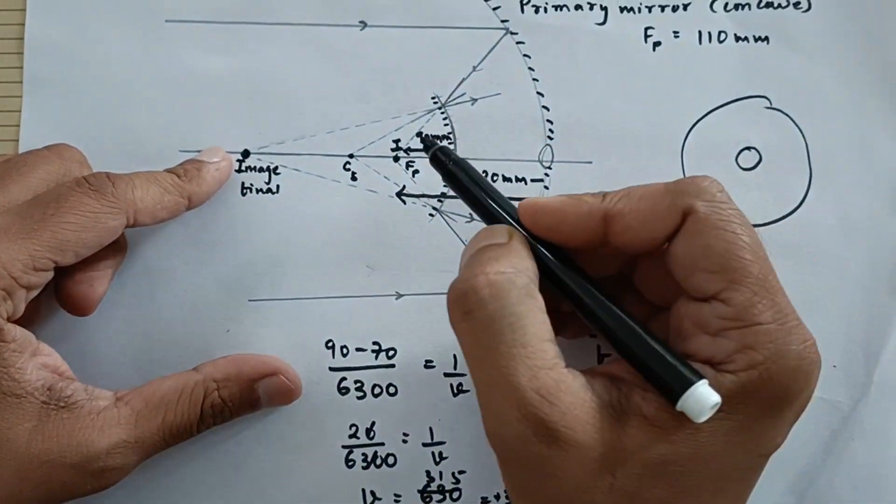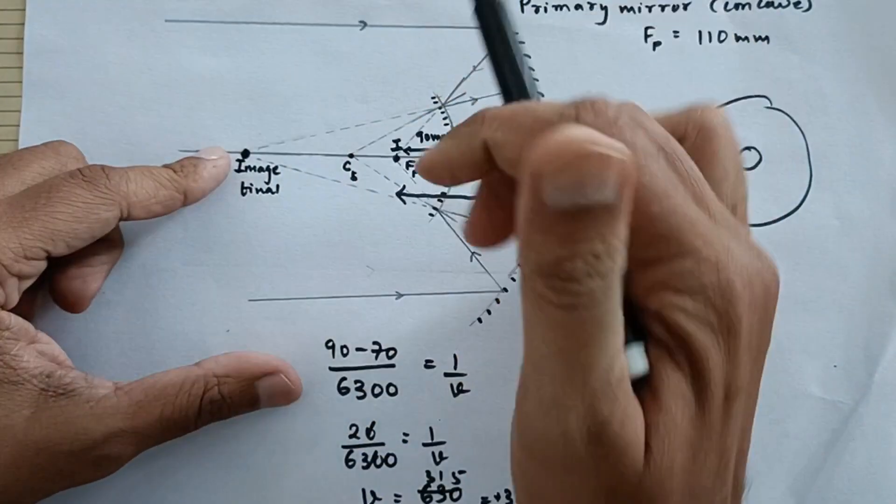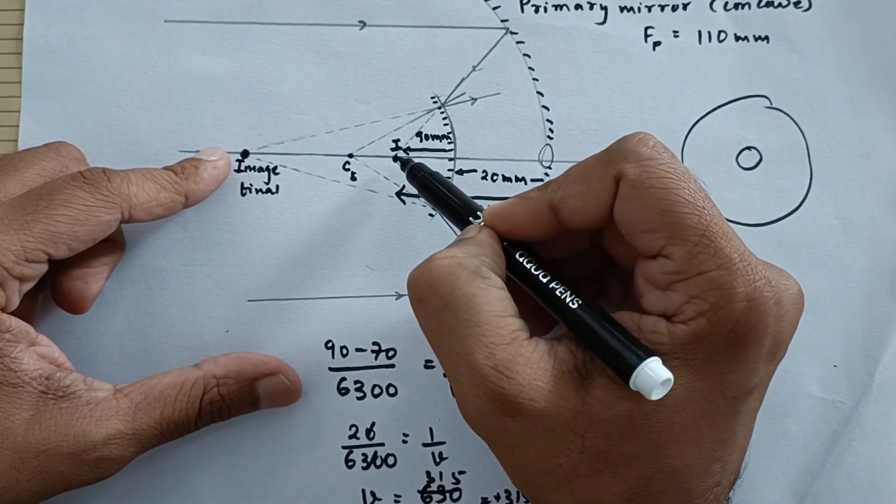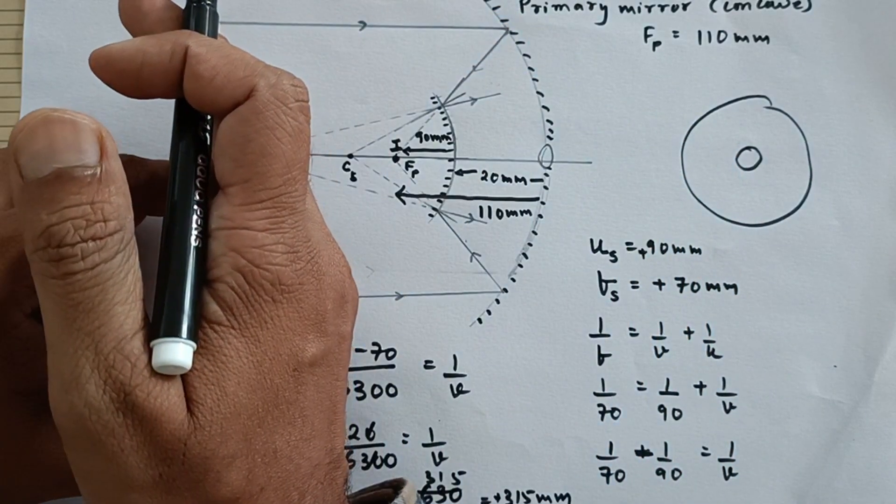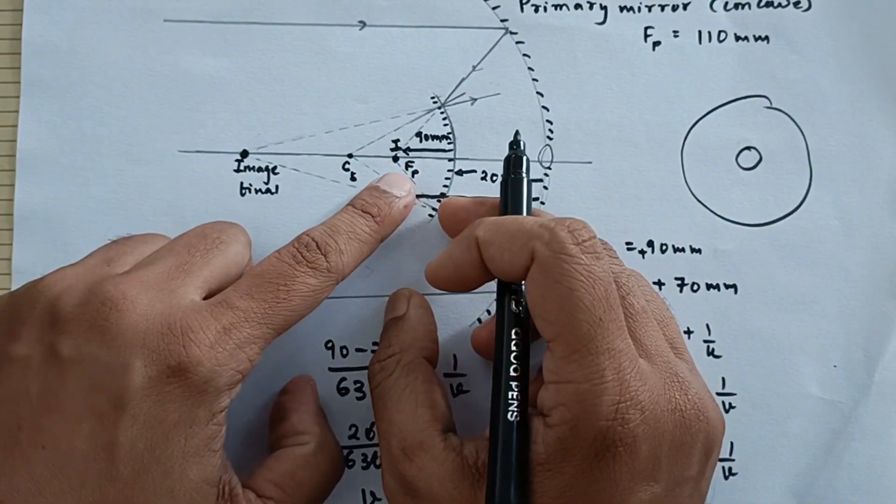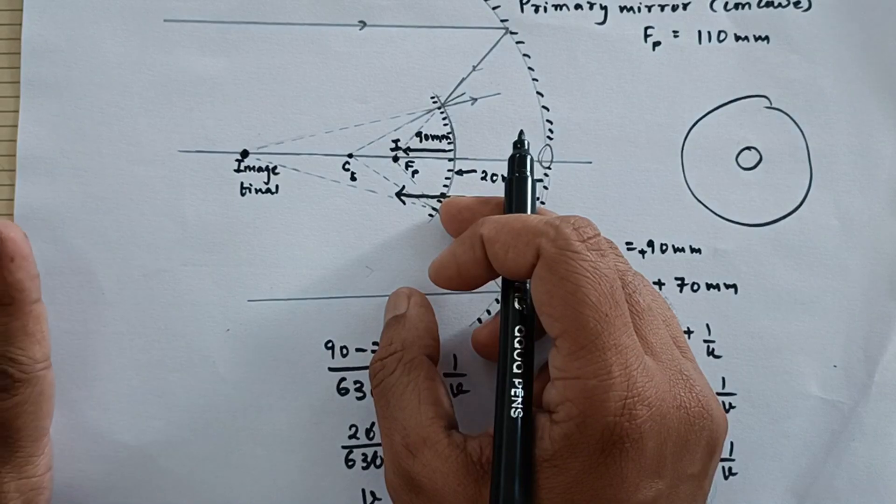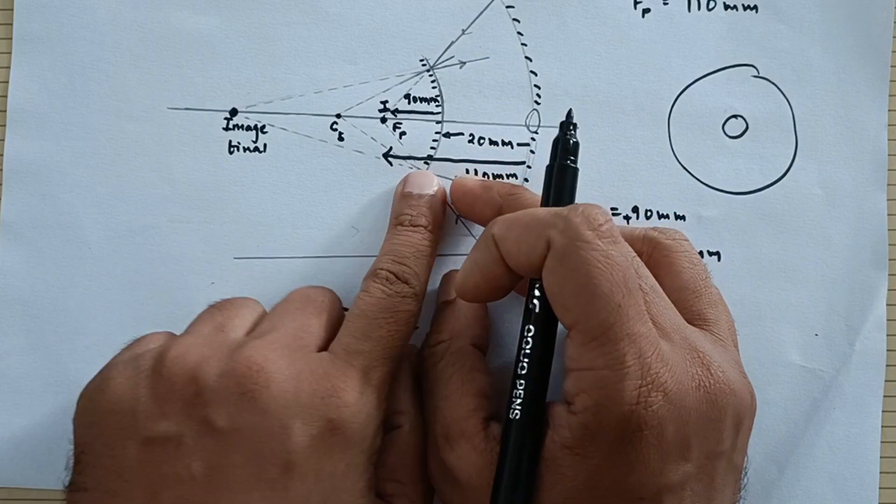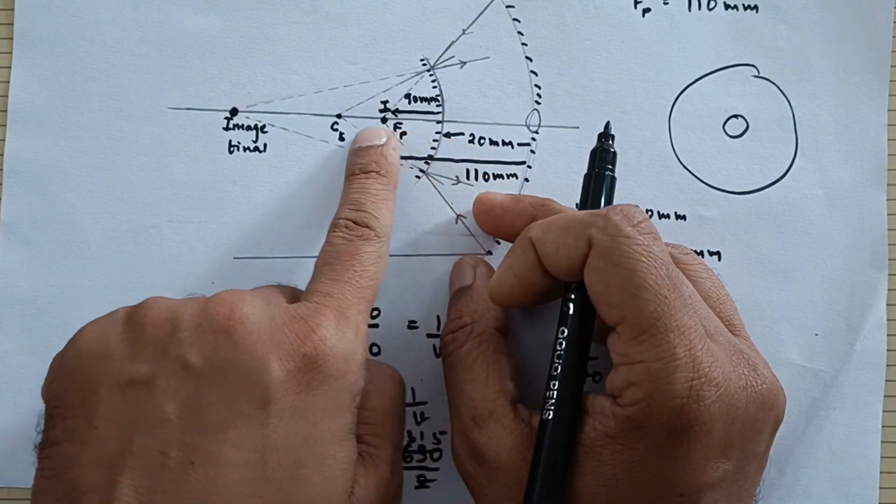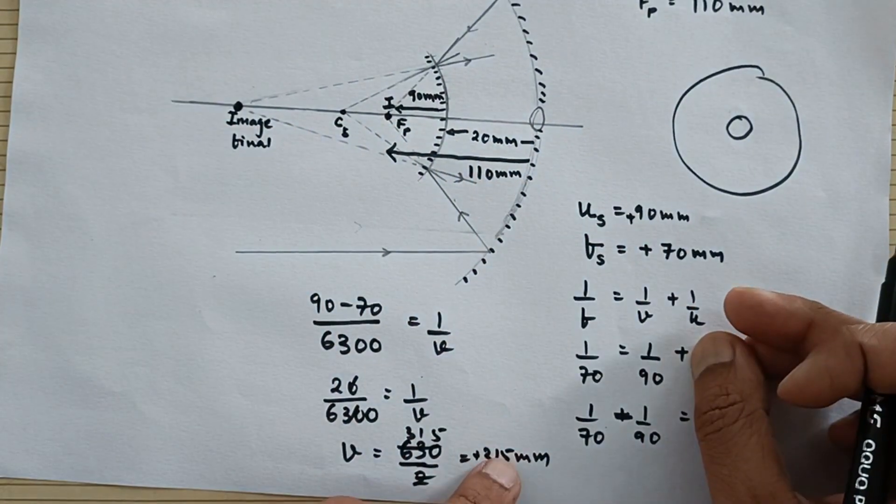So for this mirror, this is the object at infinity and this is the image. For this mirror, this is the object and final image is again over here. And since the object and image are on same side, the object is virtual, the image is also virtual in nature. If you feel, you can definitely comment, post your valuable comments in the comment section that the image is on the left hand side of the mirror because this is possible.